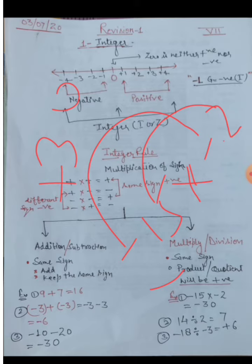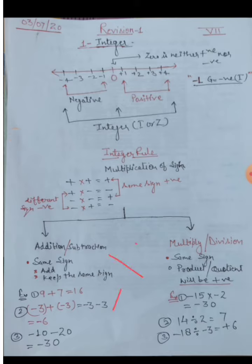For division: minus 18 divided by minus 2. We can write this as minus 18 upon minus 2 in fraction form. Both are the same sign, so the answer will be positive. Same sign means the quotient is positive.